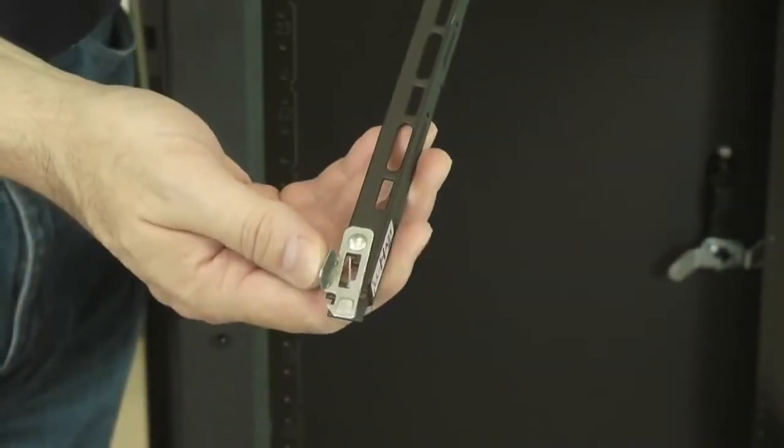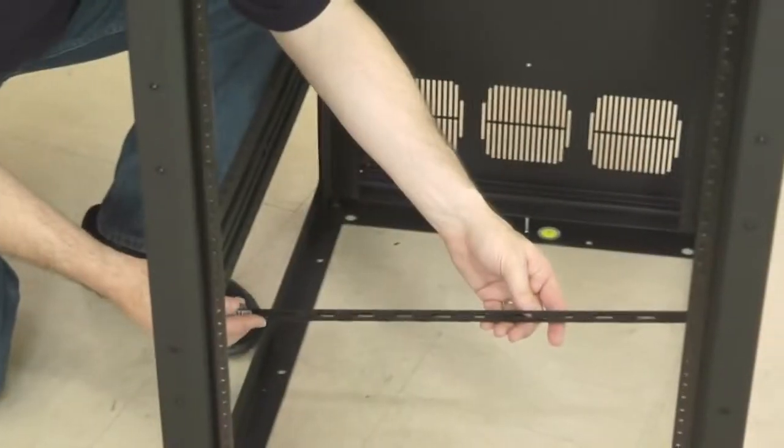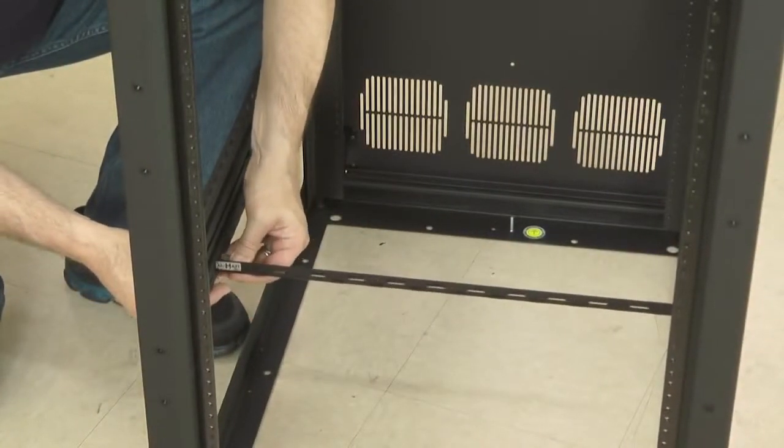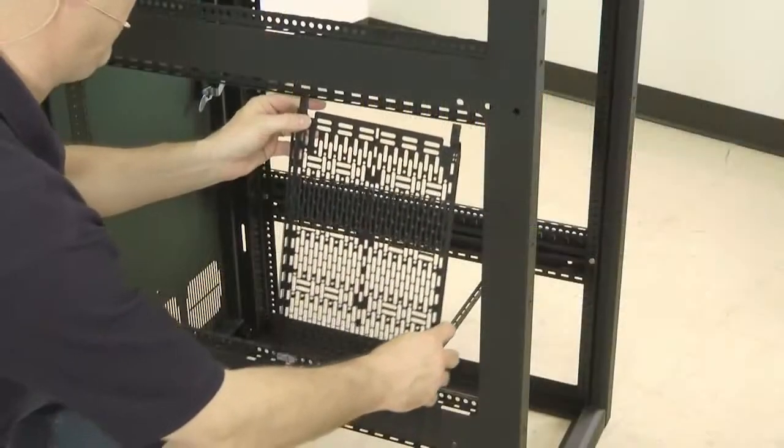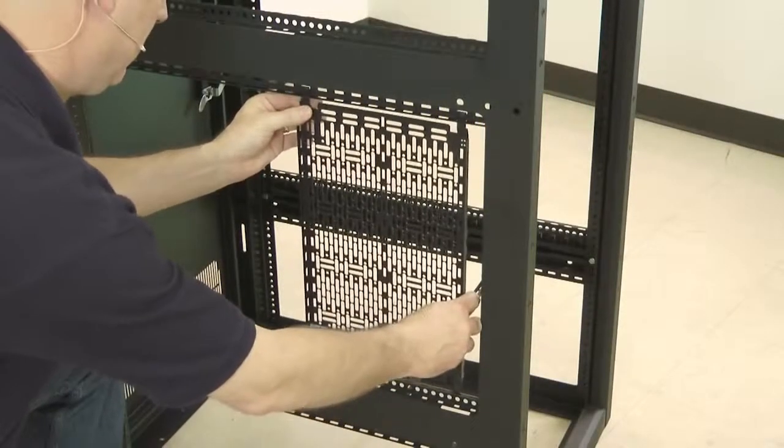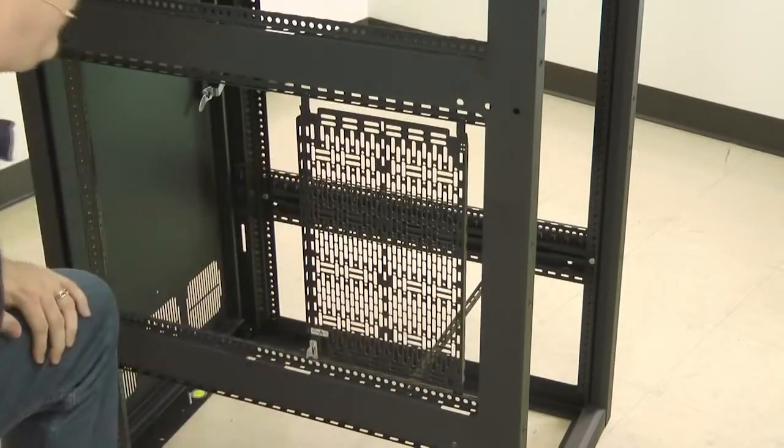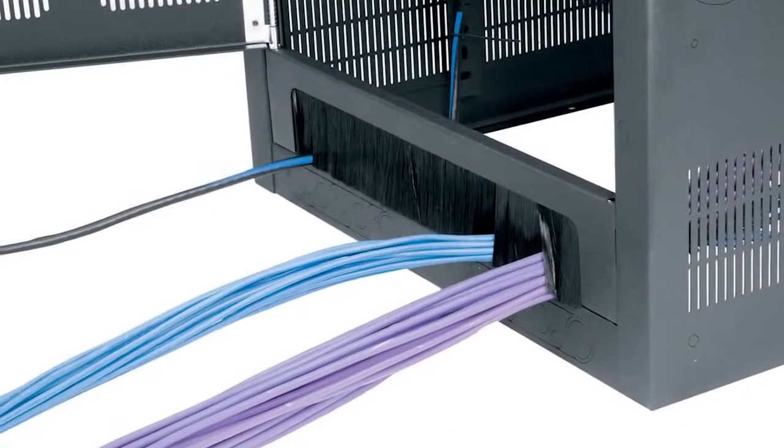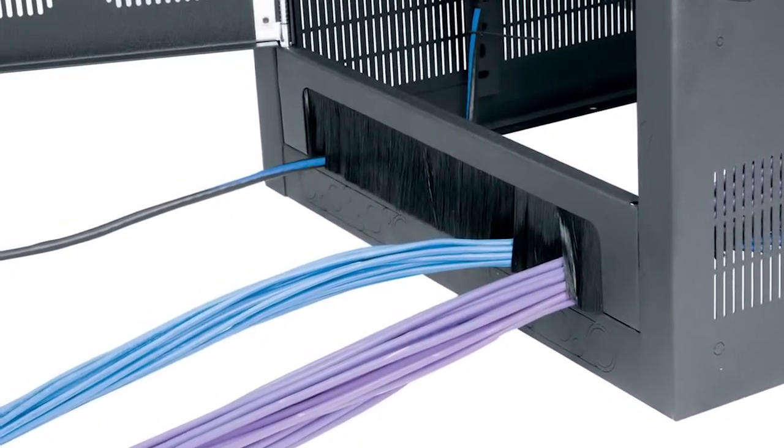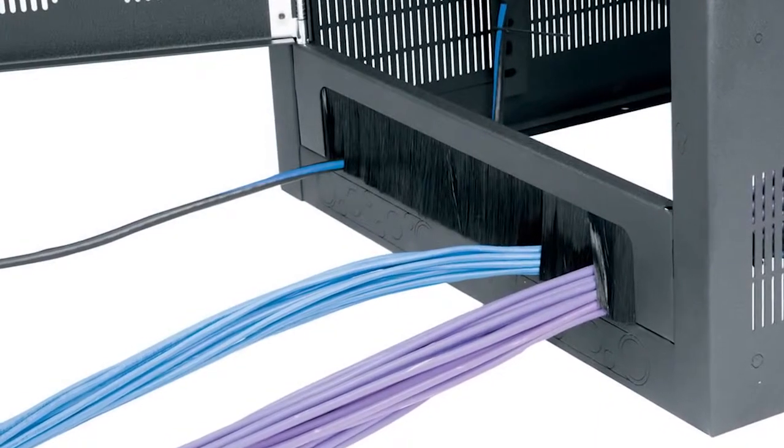The patent pending lever lock system provides tool-free installation of cable management accessories and can also be used to mount small items such as interface boxes and power supplies to save rack space. Optional brush grommet rear doors make cable entry easy at the top or bottom of the rack.